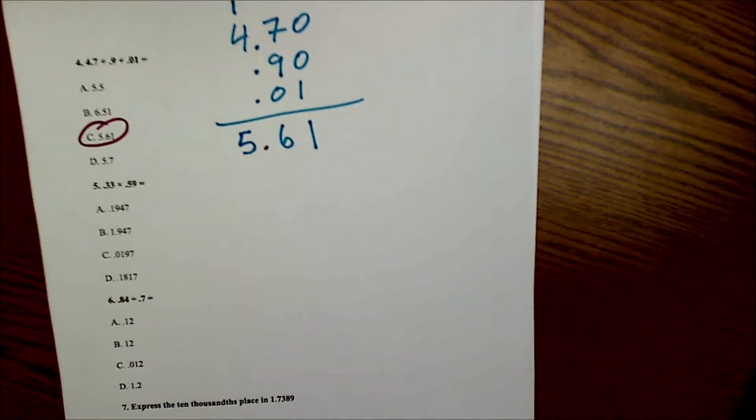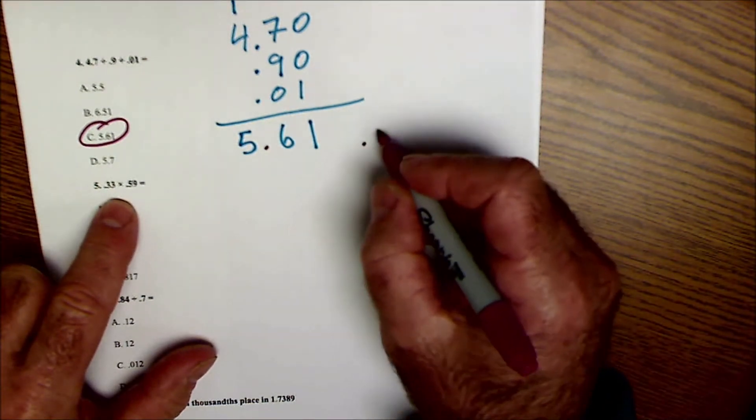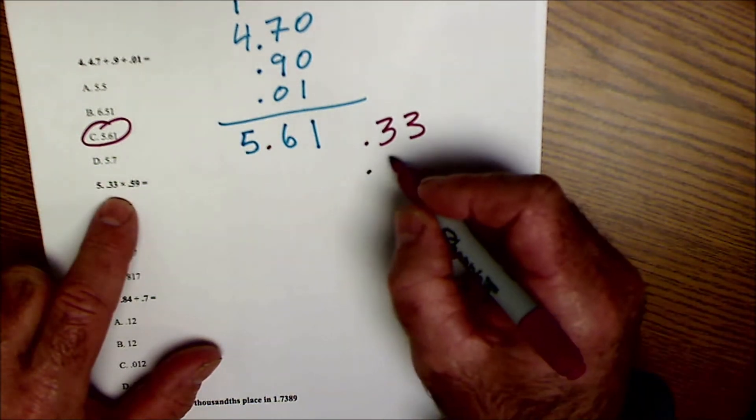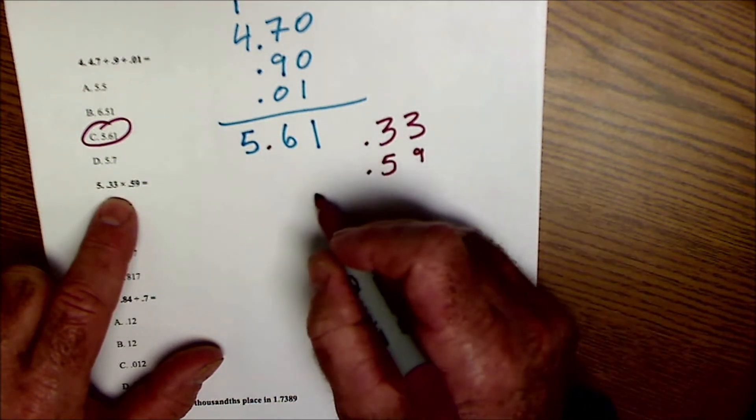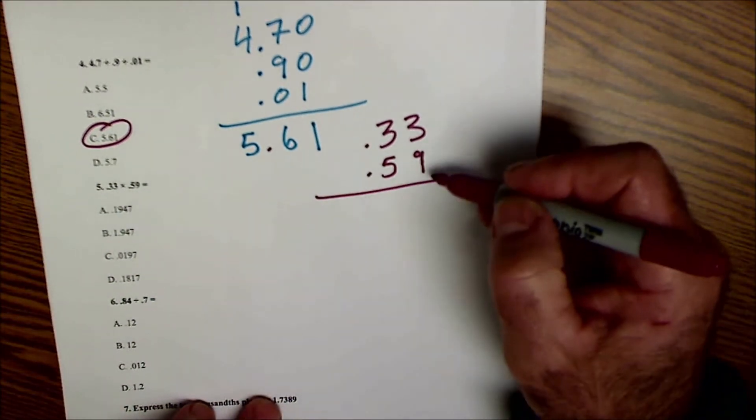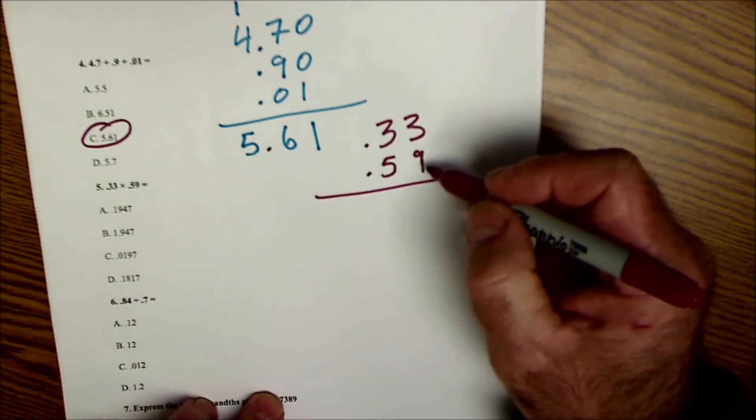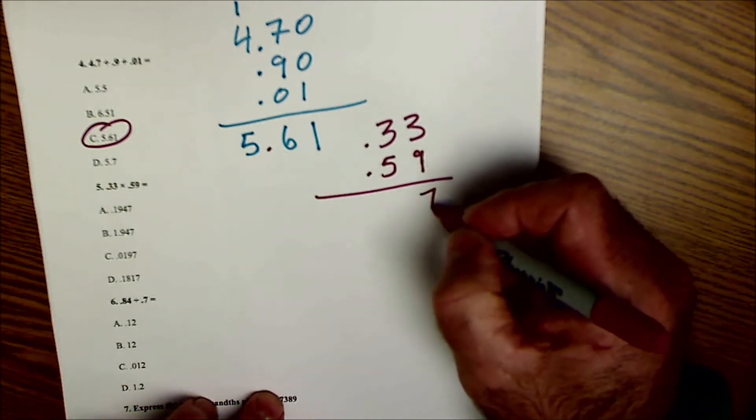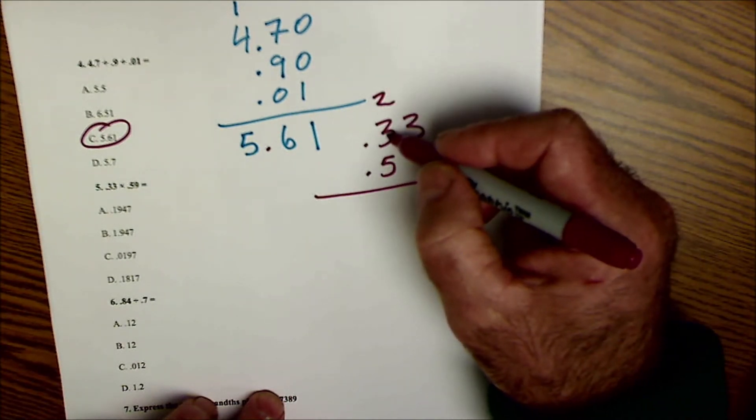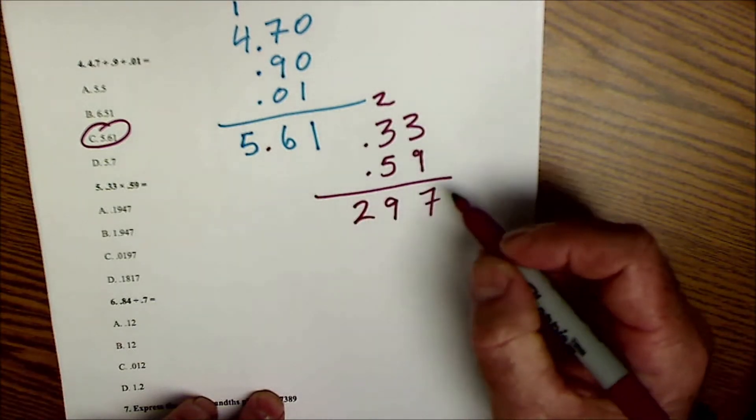Number 5, I'm multiplying decimals so I don't line them up here, I keep track of them and I'll show you how I do that. So .33 times .59, multiplication is commutative so it could be either way. I'm gonna do the 9 times this thing, hold a placeholder, and then 5 times that and add that together. So 9 times 3 is 27, carry the 2. 9 times 3 is 27 plus that 2 is 29. I have that placeholder right here.